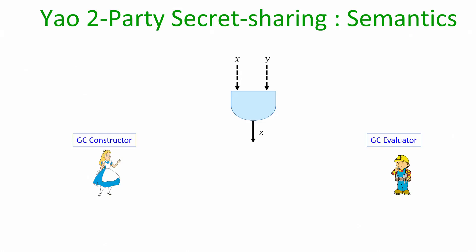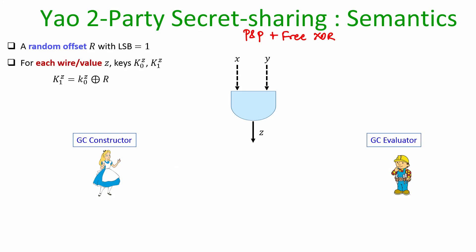The Yao's two-party secret sharing semantics we had already discussed; let me quickly go through it. We will follow the point-and-permute optimization along with the free XOR technique, where there will be a random global offset whose LSB is 1, known to the constructor. If a value Z is supposed to be Yao's secret shared,